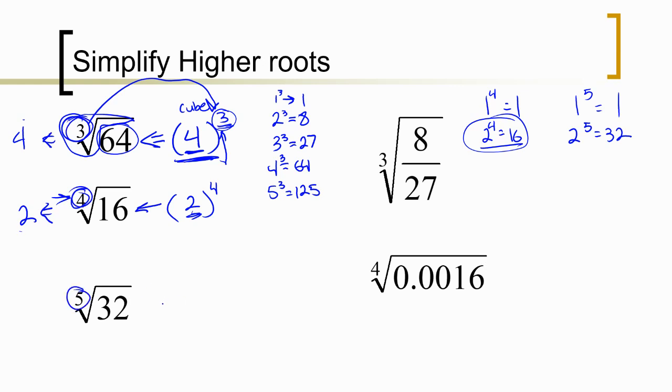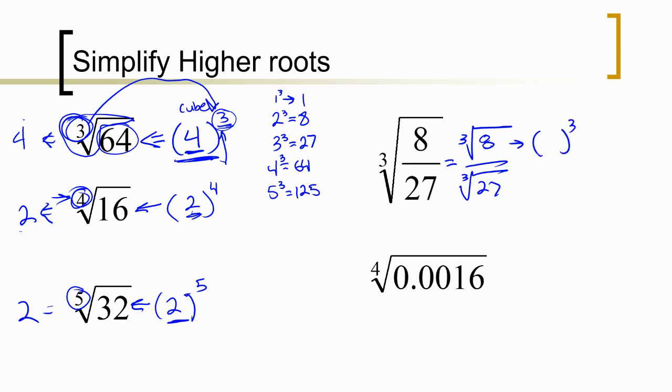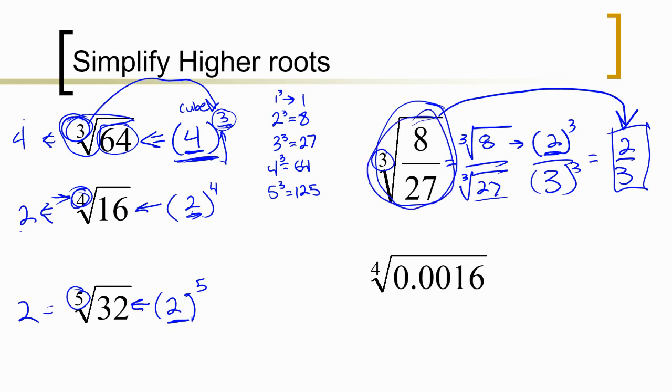Over here, we're looking for what to the fifth power is 32? Well, that's also going to be 2 because 2 to the fifth power is 32. Now, when we have a quotient, what we're looking for is separation of the top and the bottom. We can separate this to be the cube root of 8 over the cube root of 27. What number raised to the third power is 8? That's 2. What cubed is 27? So we're answering those questions separately. What we'll find is that 2 over 3 is what we can cube to be 8 over 27. So the cube root of 8 over 27 is 2 thirds.